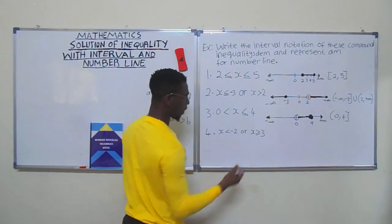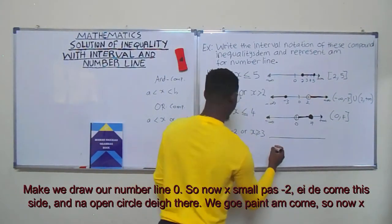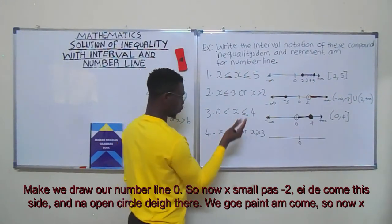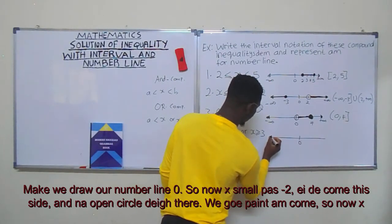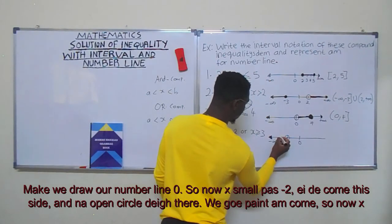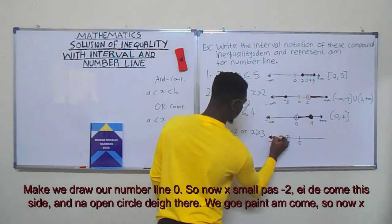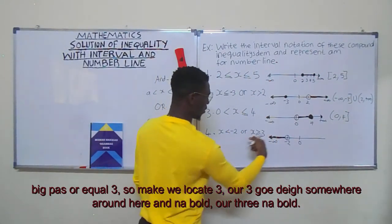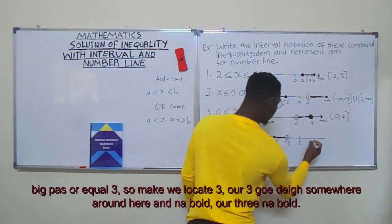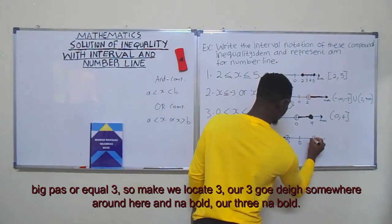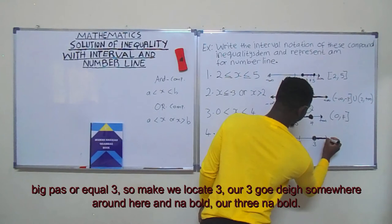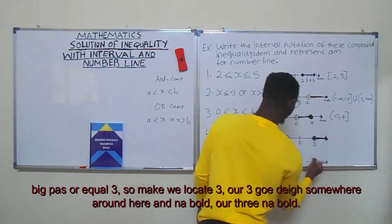For the last one, we draw our number line. We have x less than minus two, coming to this side, with an open circle. And x greater than or equal to minus three, so we locate minus three and give it a closed circle.